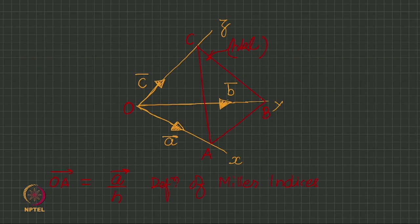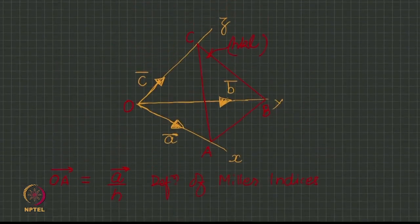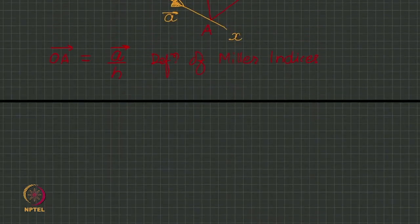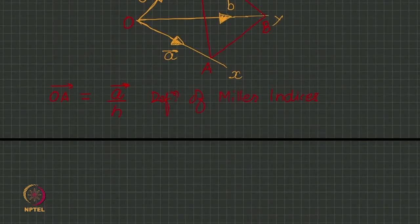So, reciprocal of h multiplied by a gives you the intercept, the vector intercept. So, you have OA, you have OB, and you have OC.